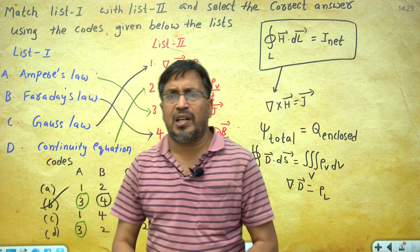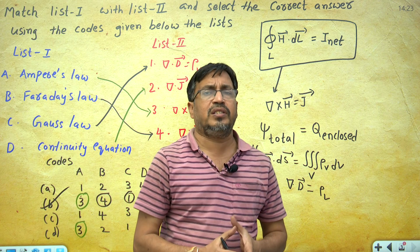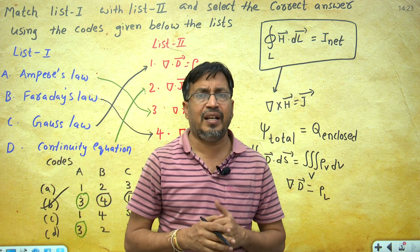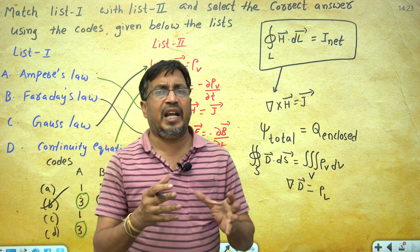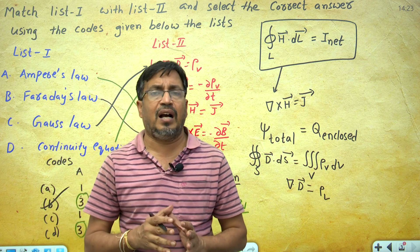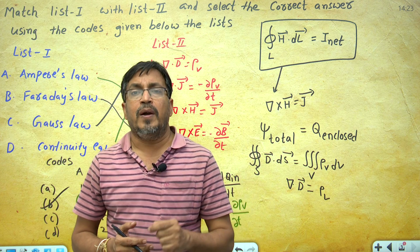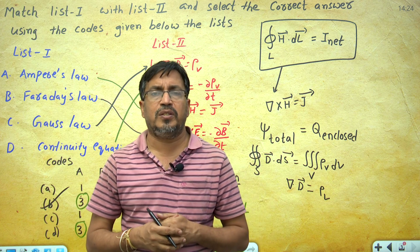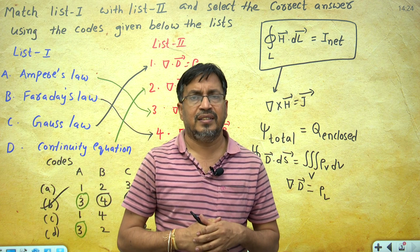Most questions from this topic are theoretical and related to Maxwell's equations. There are four Maxwell's equations in time-varying fields: (1) divergence of D equals rho_V, derived from Gauss's law; (2) curl E equals minus ∂B/∂t, derived from Faraday's law; (3) curl H equals J plus ∂D/∂t, derived from the modified Ampere's circuit law; and (4) divergence of B equals 0, derived from the law of conservation of magnetic flux. Thank you, students.